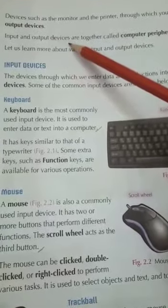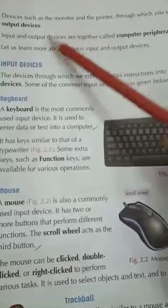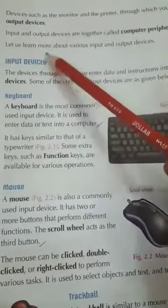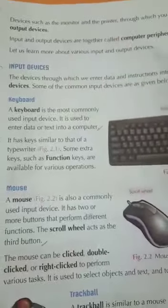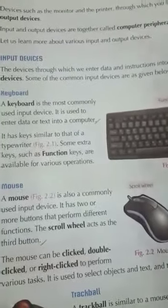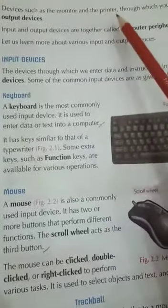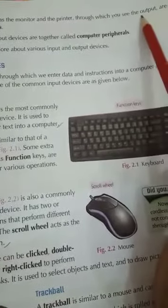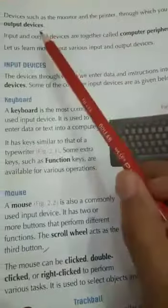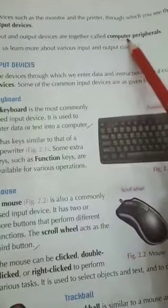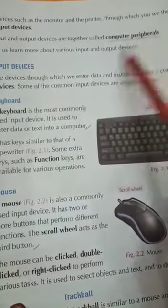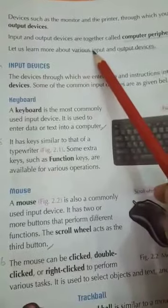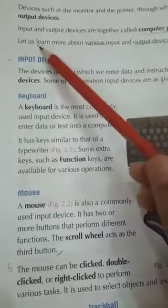Input and output devices are together called — इन दोनों devices को computer peripherals कहते हैं. Let us learn. हम इसमें सीखेंगे कि input और output devices कौन कौन सी हैं. तो अब आपने words को underline करना है: output, computer peripherals, output devices, various. Various बचो होता है — मुक्तलिफ. Learn.